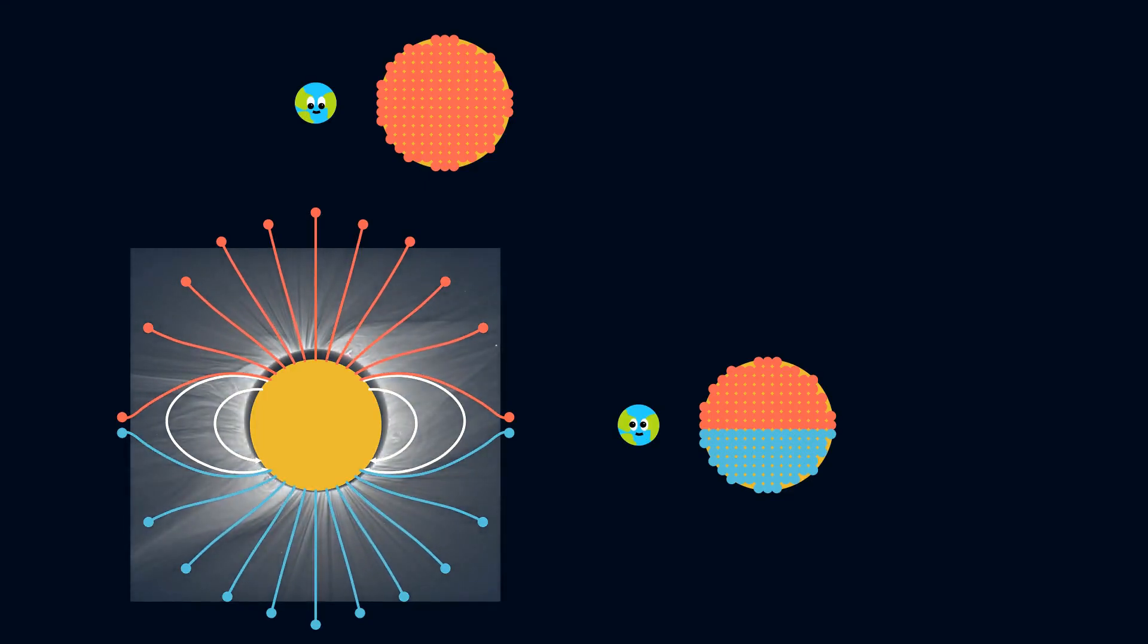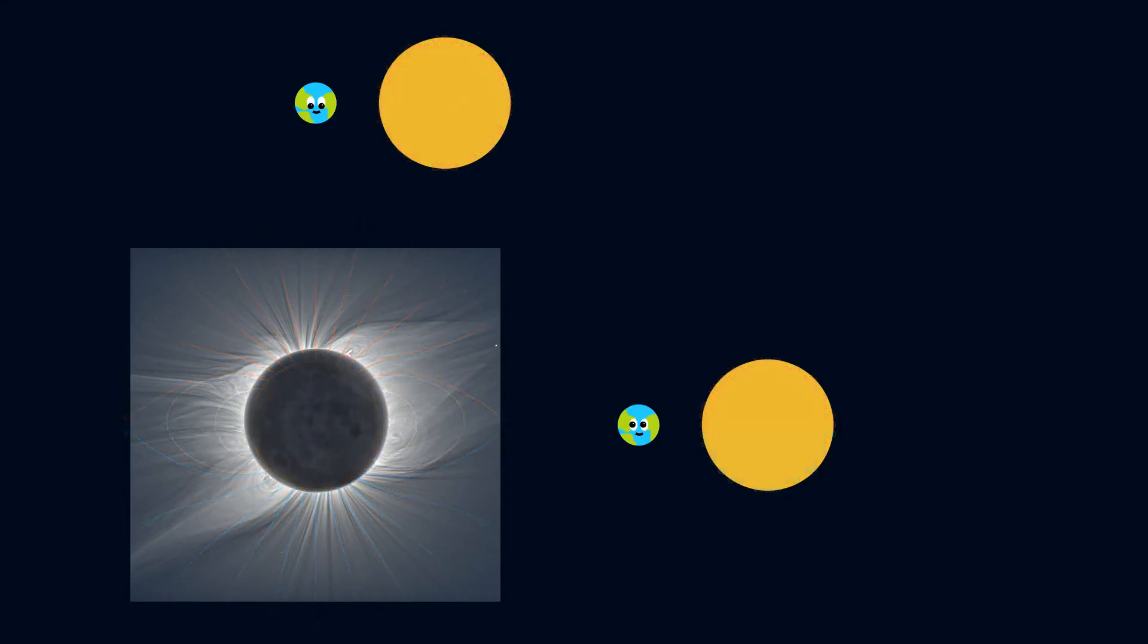However, the sun is not perfect, meaning this pattern is actually more warped, as this real image of the solar eclipse shows.